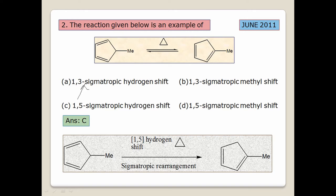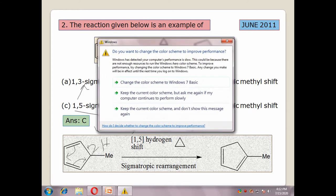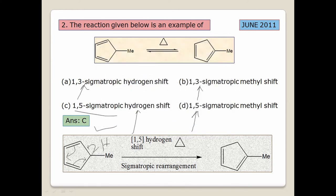The possible answers are C and D. If you do a hydrogen shift, the hydrogen migrates, the double bond migrates, and you get a double bond connected to the methyl group. So a 1,5-sigmatropic hydrogen shift is taking place — answer C is correct. This question appeared in June 2011. This elimination approach is a useful method.